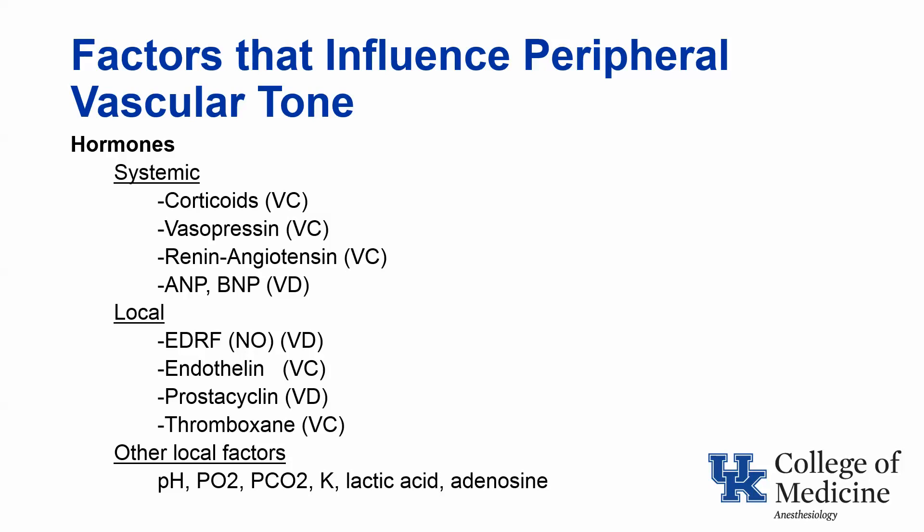Other factors that influence peripheral vascular tone are hormones. These include systemic hormones such as corticosteroids, vasopressin, renin-angiotensin, atrial natriuretic peptide, and brain natriuretic peptide, and also local hormones such as EDRF, endothelin, prostaglandin, and thromboxane, and finally other local factors like pH, CO2, O2, potassium, lactate, and adenosine.